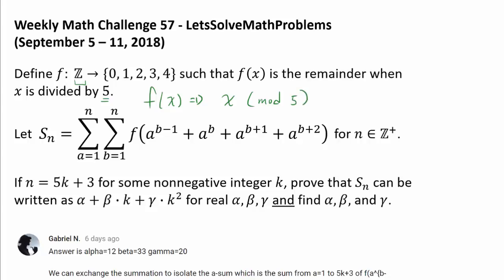Let capital S sub n be the double summation, a equals 1 to n, b equals 1 to n, of f of a^(b-1) + a^b + a^(b+1) + a^(b+2), for n belonging to the set of positive integers.